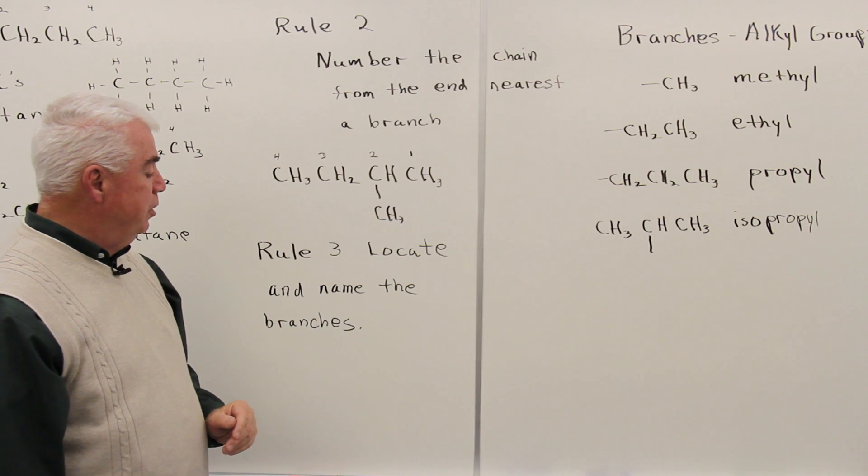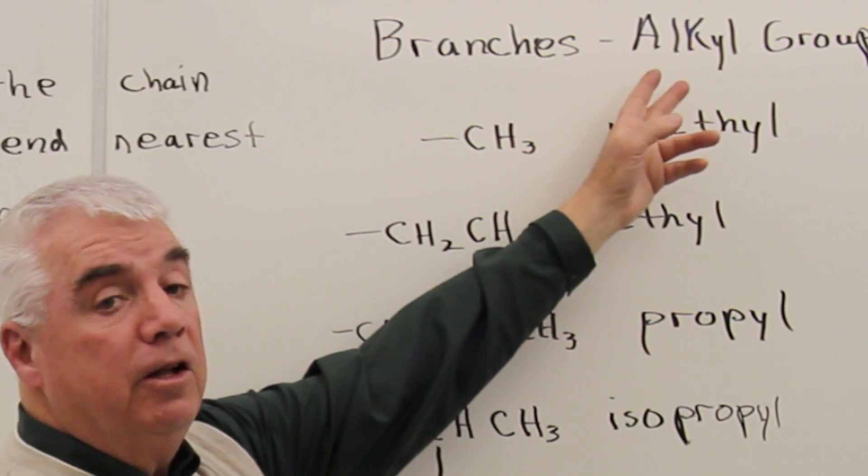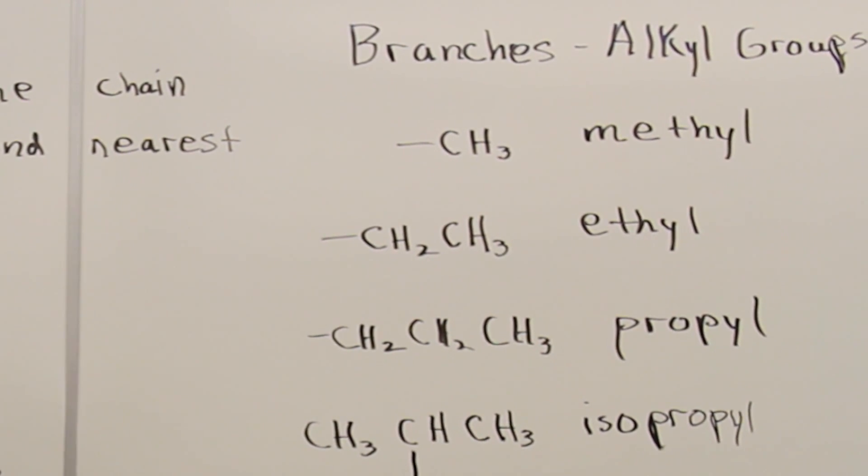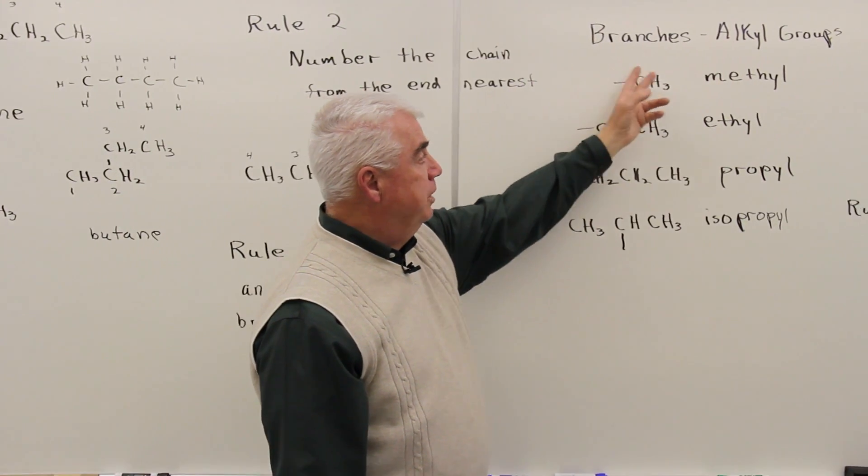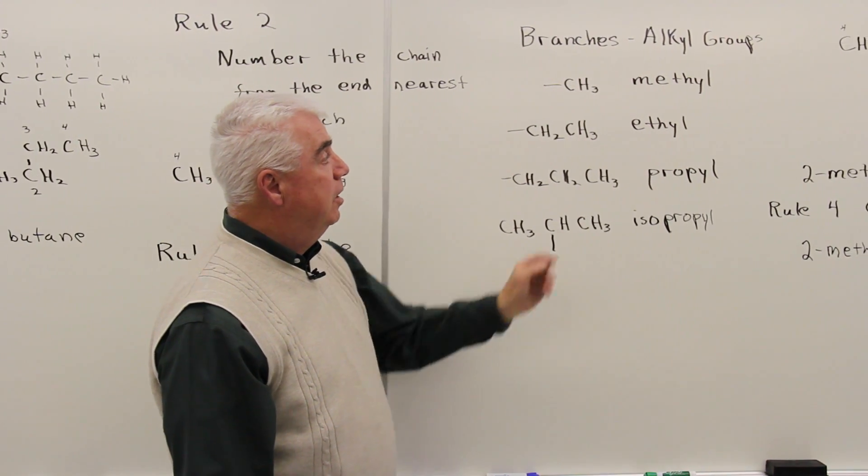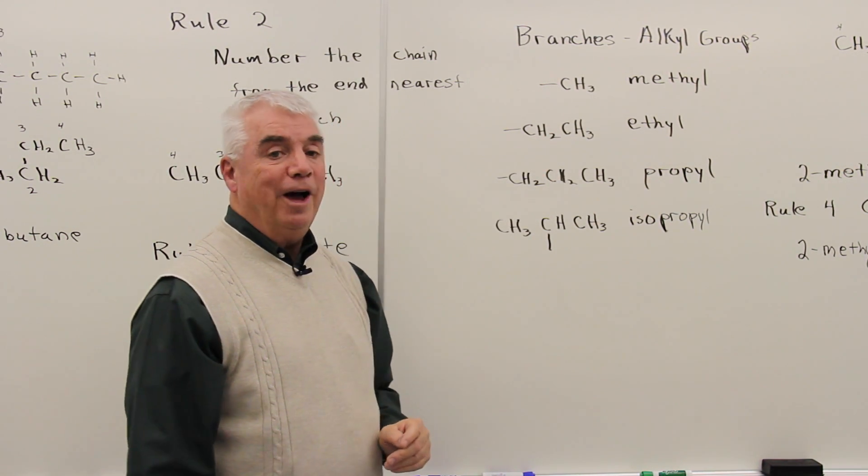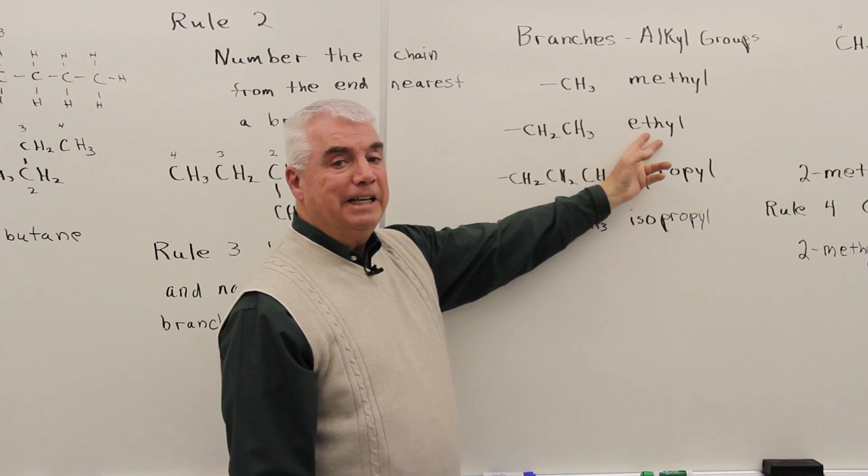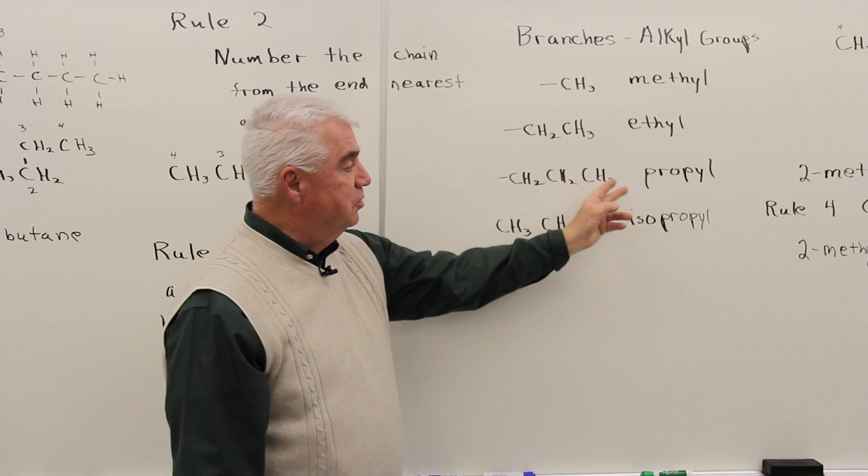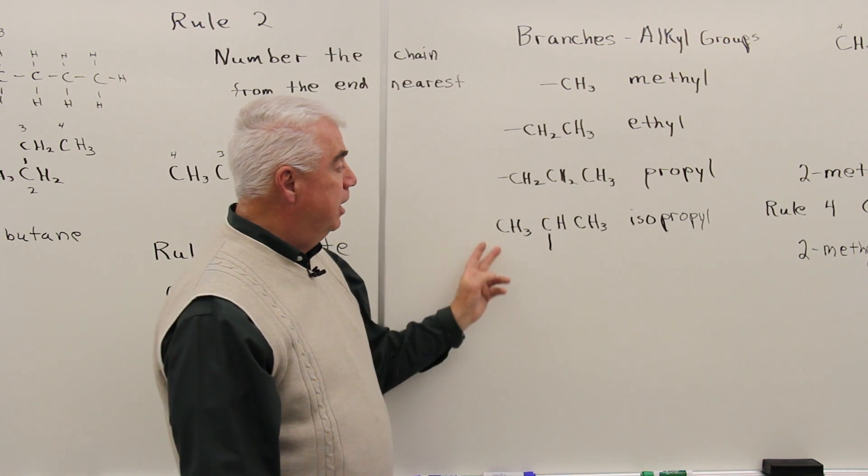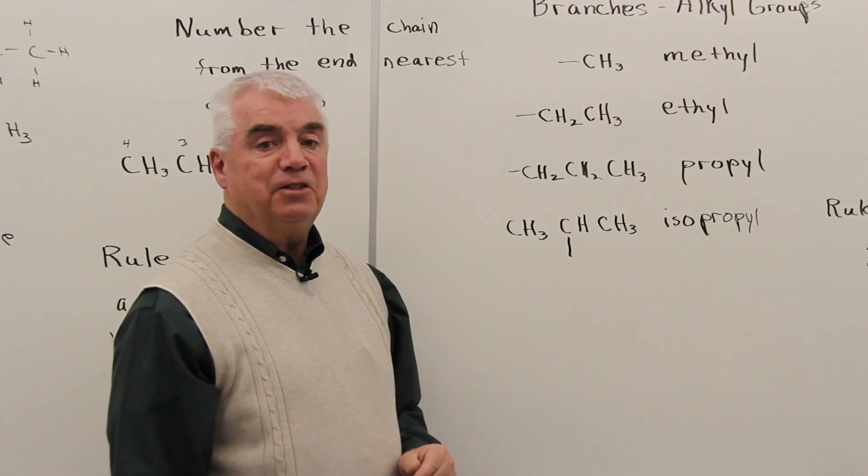Rule number three is to locate and name the branches. And the branches have these names. We call them alkyl groups, have a yl ending instead of an ane ending. And if I had methane and removed a hydrogen from it, so that we just had this collection of atoms now, a CH3, we'd call it a methyl group. If we had a group that had two carbons in it, well, it's derived from ethane, but we'd give it the yl ending, so it would be an ethyl group. A three-carbon group bonded to the end position is called propyl. And there's a second way that we can bond. A group of three carbons could be bonded to a long chain through that center position. In that case, it's called isopropyl.